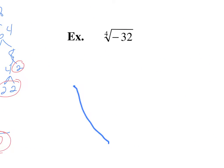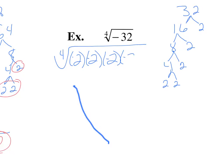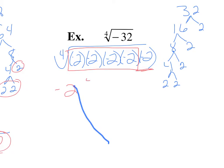The fourth root of negative 32: when we do the tree on 32, we end up with five 2's. Because this is negative 32, we put a negative on all those 2's. We're looking for the fourth root, so we need a group of four negative 2's. That group puts a negative 2 on the outside, and one negative 2 has to stay on the inside.